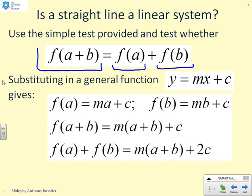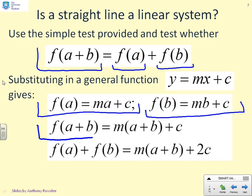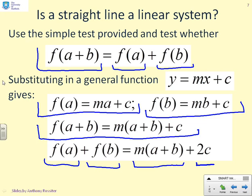Take our straight line, y equals mx plus c, and then I can put in a and I get m a plus c. I can put in b and I get m b plus c. And I can put in a plus b and I get m times a plus b plus c. Now clearly, you can see that f of a plus f of b gives me m times a plus b plus 2c.